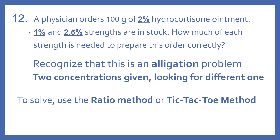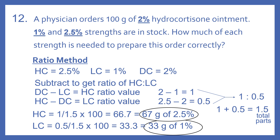To solve, we can use the ratio method or the tic-tac-toe method, and I'll show you both. With the ratio method, first we identify the HC, which is the high concentration — it's 2.5%. The low concentration, or LC, is 1%, and the desired concentration, or DC, is 2%.